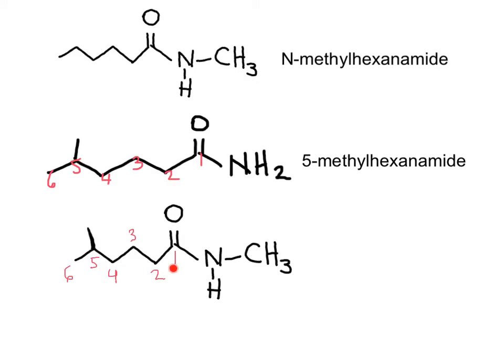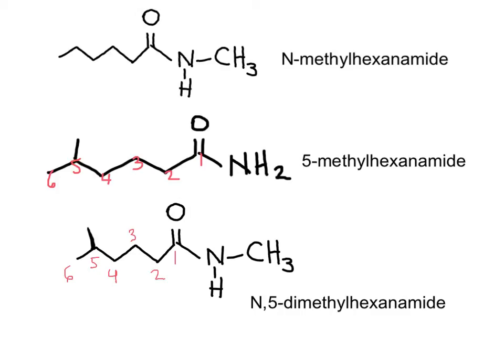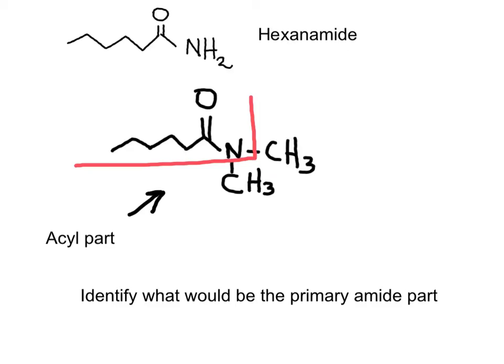In this last example, we observe that not only the hydrocarbon chain has a methyl group, like in 5-methylhexanamide, but we also have a methyl group on the nitrogen. When grouping, always place the nitrogen designator first, so the name becomes N,5-dimethylhexanamide.